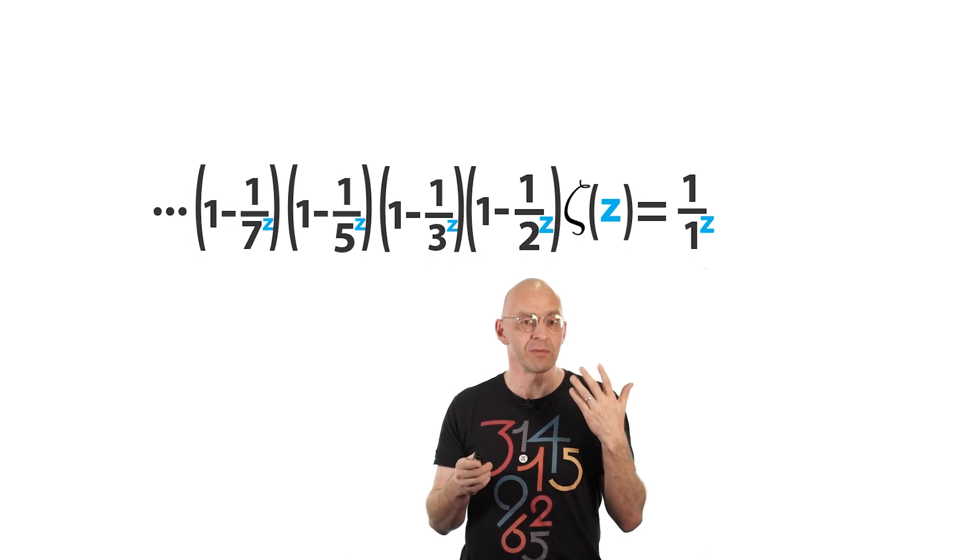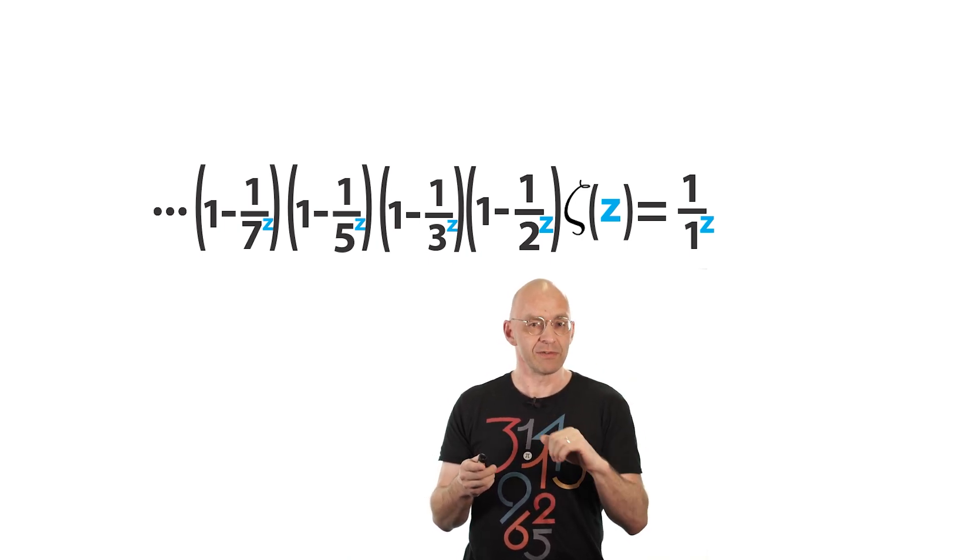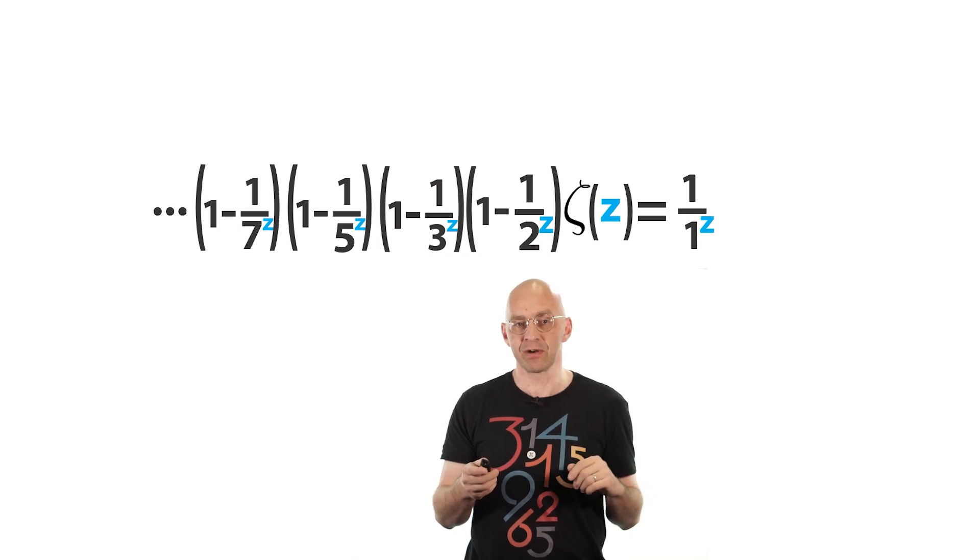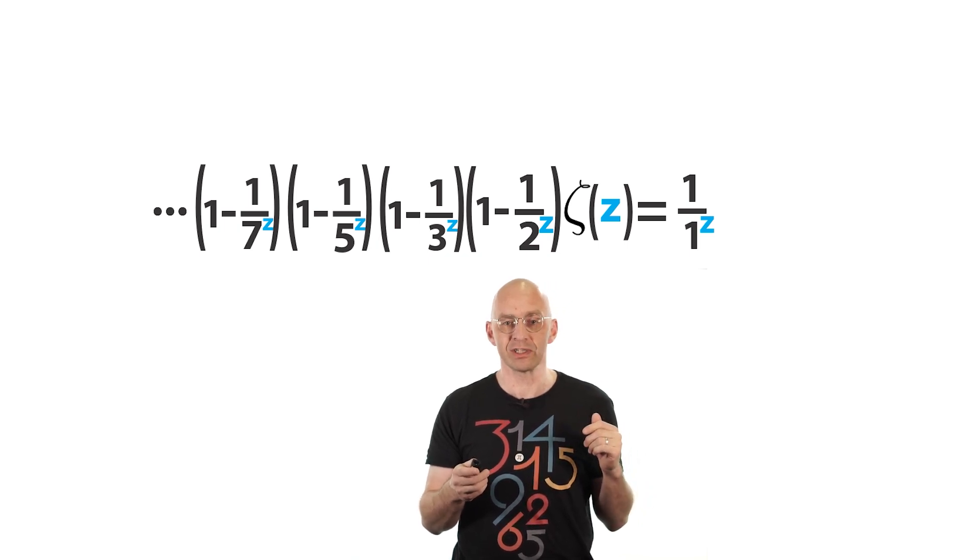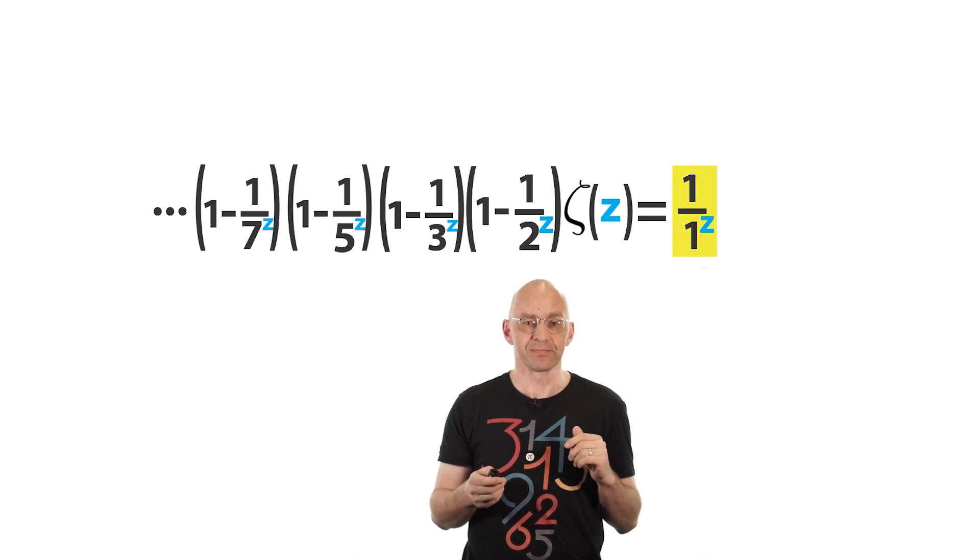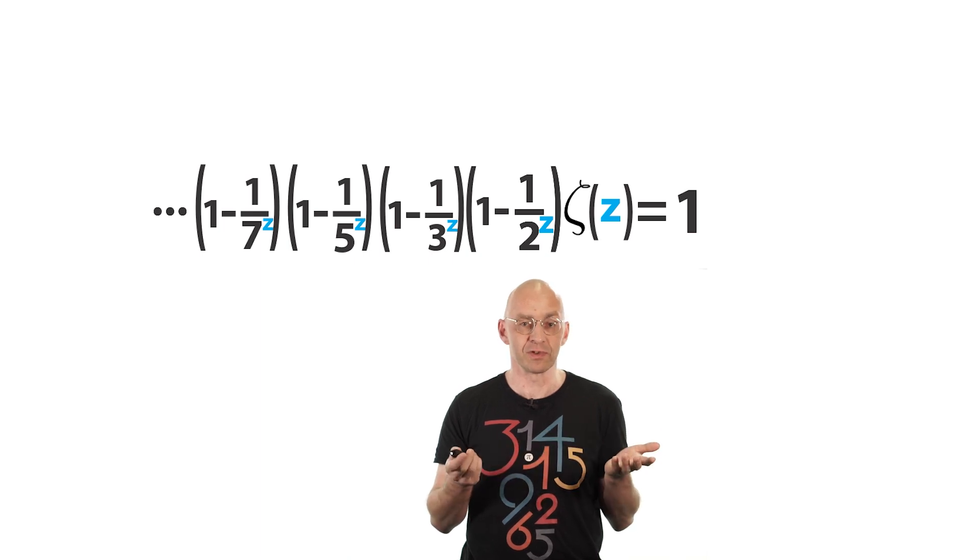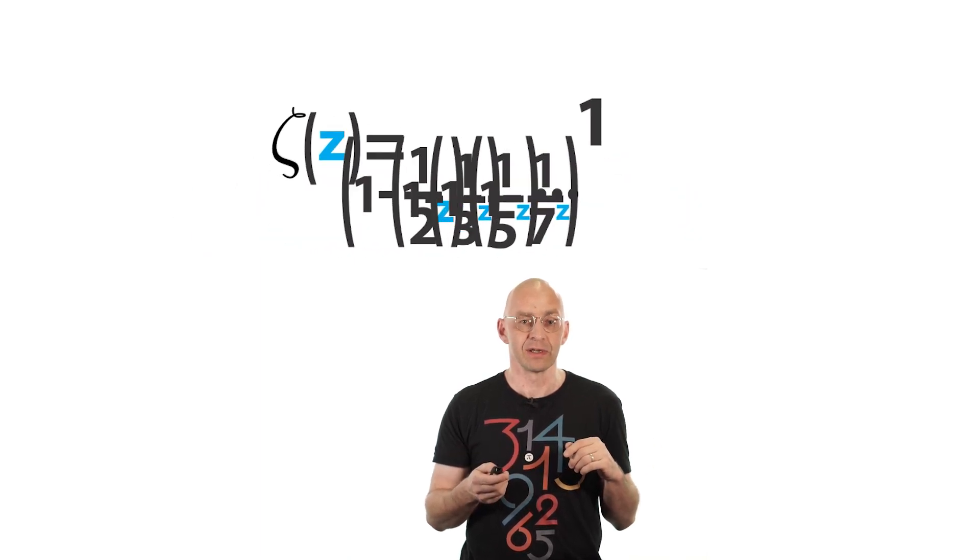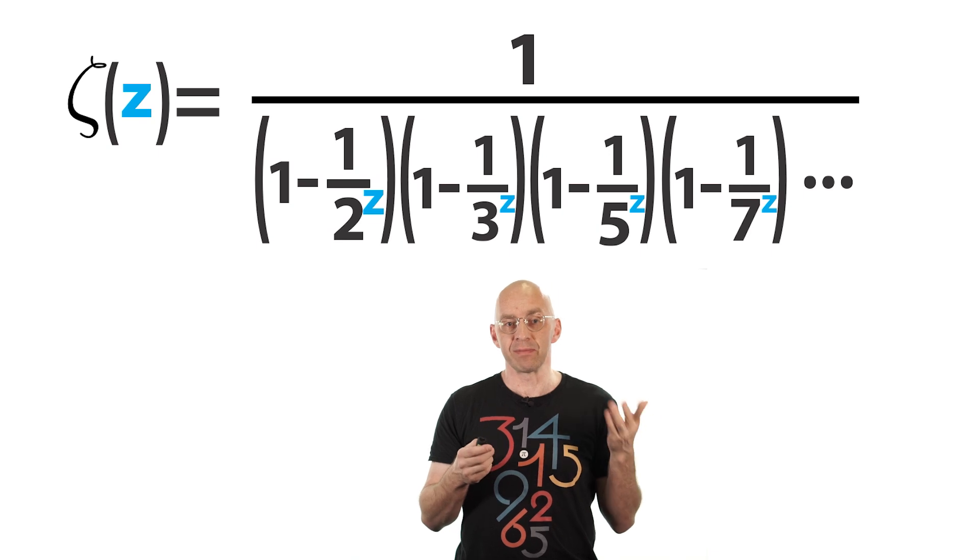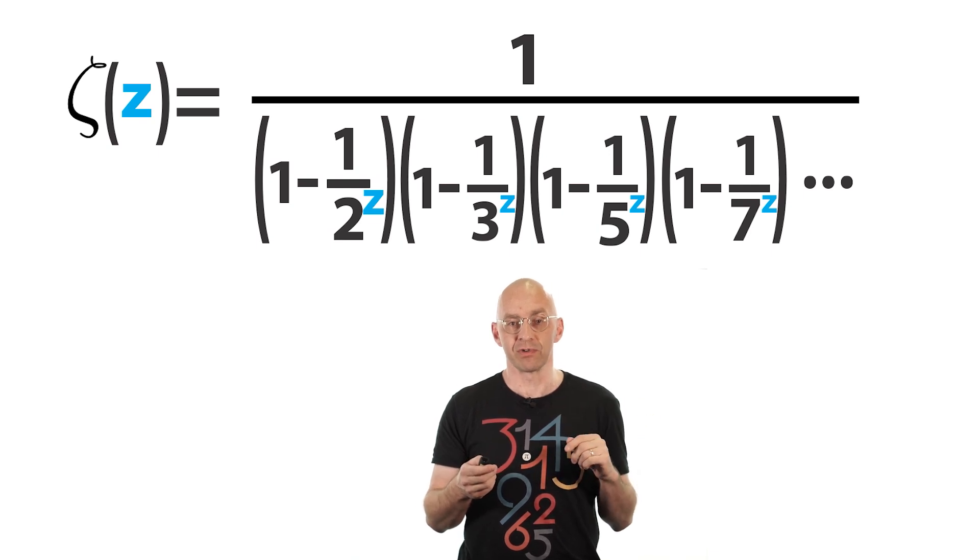And the numbers in the denominators on the left are exactly the prime numbers. Now, just in case you know a little bit more, can you see the famous prime number sieve of Eratosthenes in action in this derivation? Okay, now the right side, well, that's just 1, right? So now we can solve for zeta and that gives Euler's famous product formula for the Riemann zeta function.